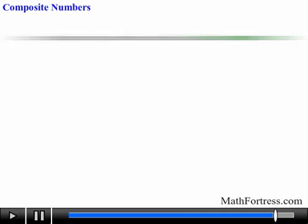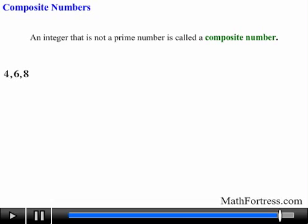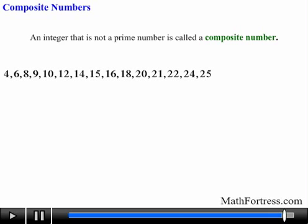An integer that is not a prime number is called a composite number. The first 20 composite numbers are 4, 6, 8, 9, 10, 12, 14, 15, 16, 18, 20, 21, 22, 24, 25, 26, 27, 28, 30, 32 and so on.